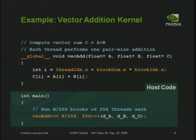This is C with a couple of syntactic extensions — the only significant one being the triple-chevron syntax. You run it through the CUDA compiler. The kernel call is asynchronous: the CPU thread continues going on doing its business while the parallel code is executing. If you need to wait for the result, you can call a synchronized function.